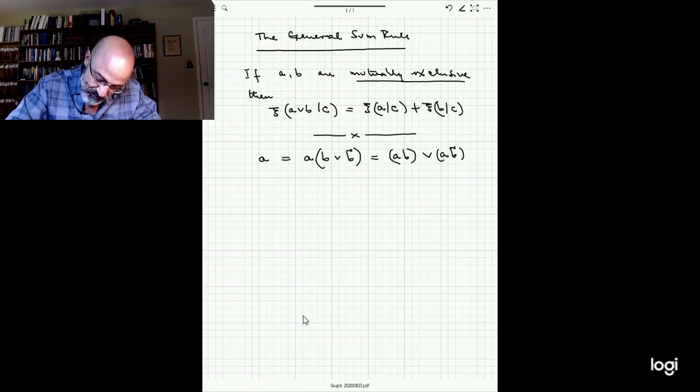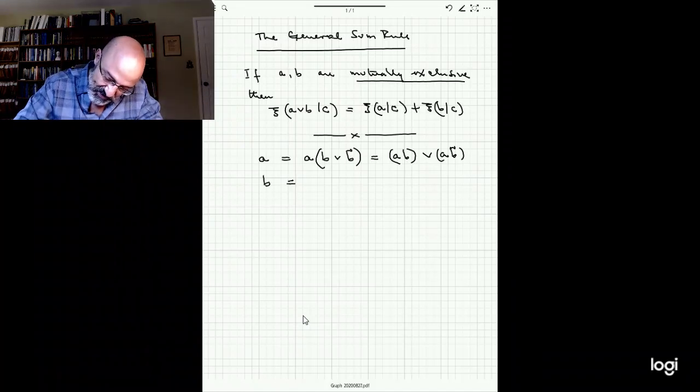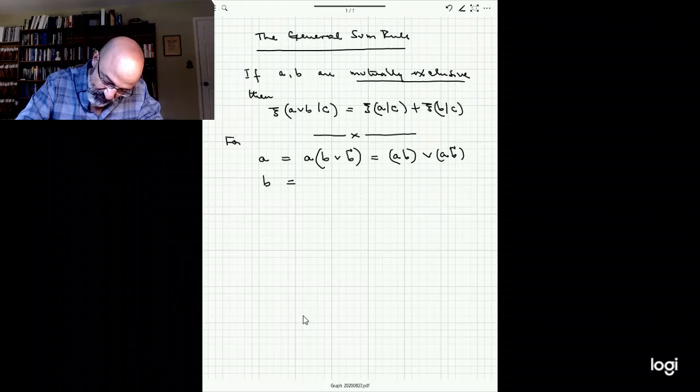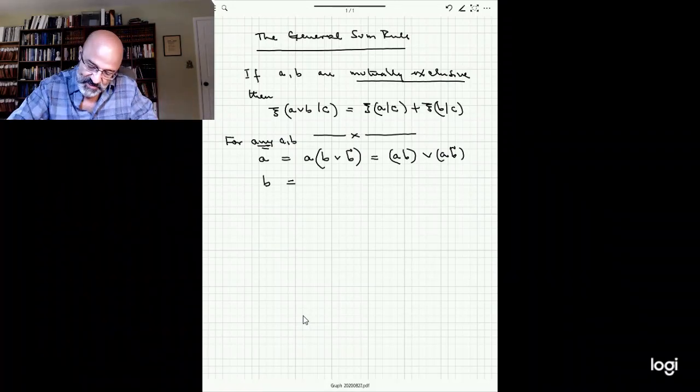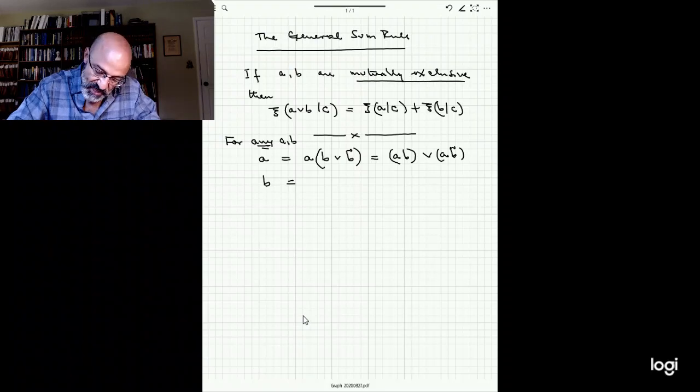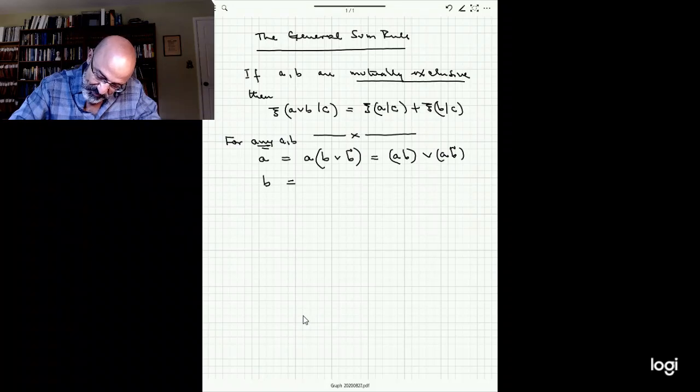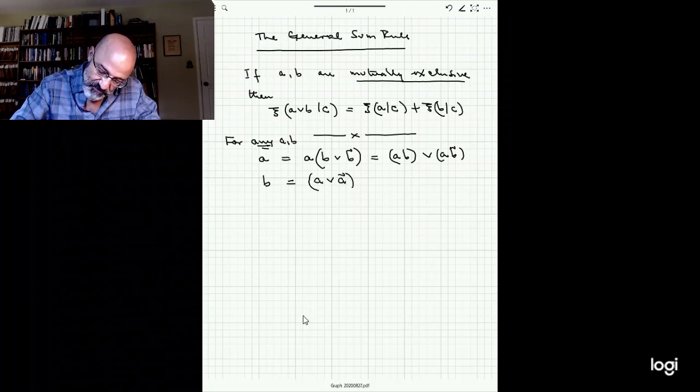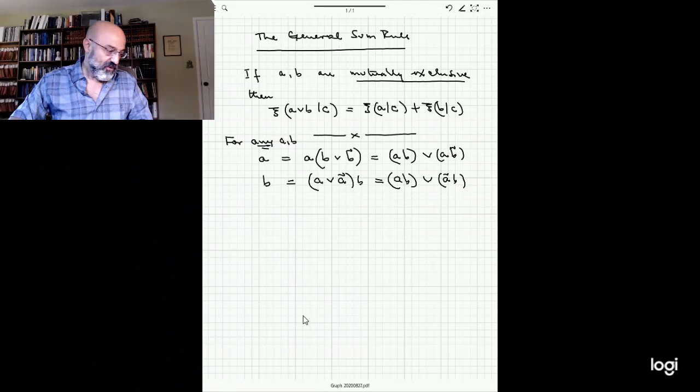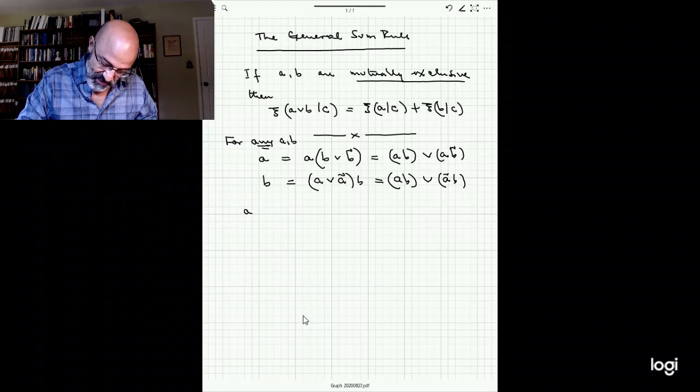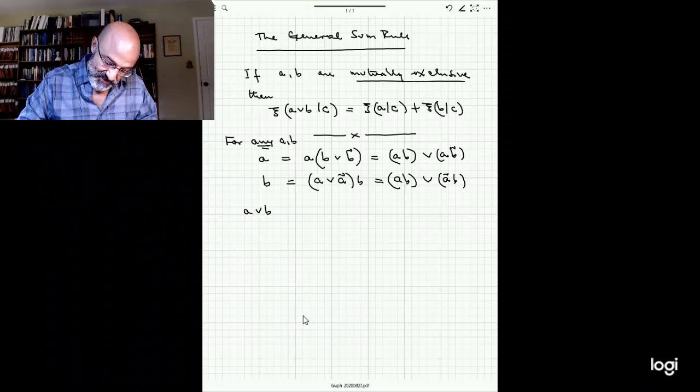We can do exactly the same thing with B. So let me make very sure what we're doing here. For any A and B now, not just mutually exclusive, this is completely general now. We're going to write exactly the same thing and write that B can be written as (A or not A) and B, which is the same as AB or (not A)B.